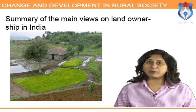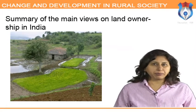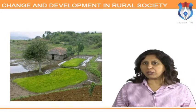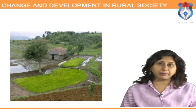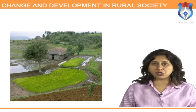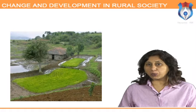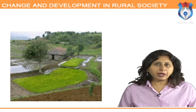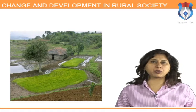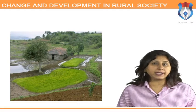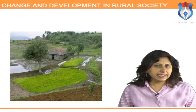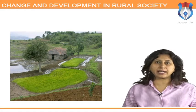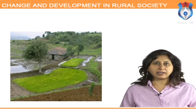Communal ownership was confined only to grassland; private ownership of land was a recognized institution. Land belonged to the person who cleared the jungle and brought the land under cultivation, and he could sell, give, bequeath, or otherwise alienate it at his own discretion. There was a clear distinction between ownership rights and restricted real estate rights.